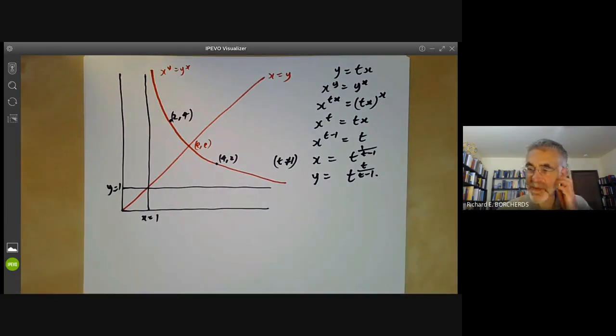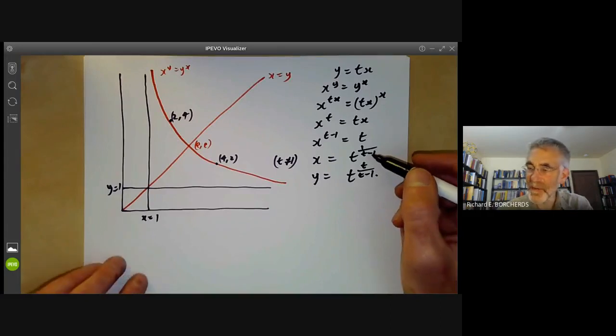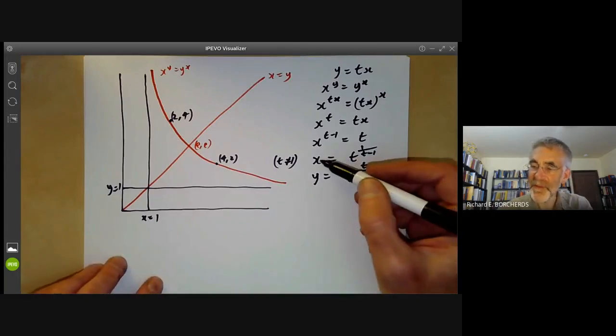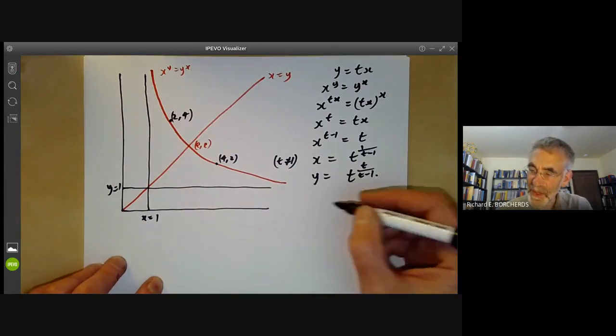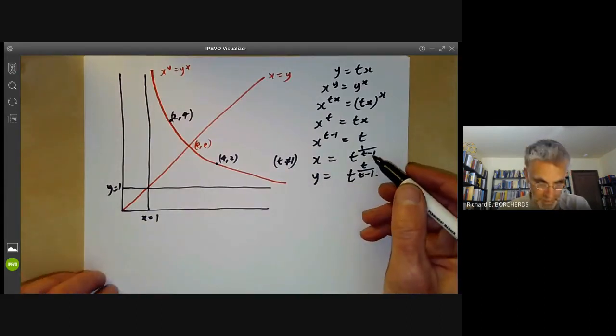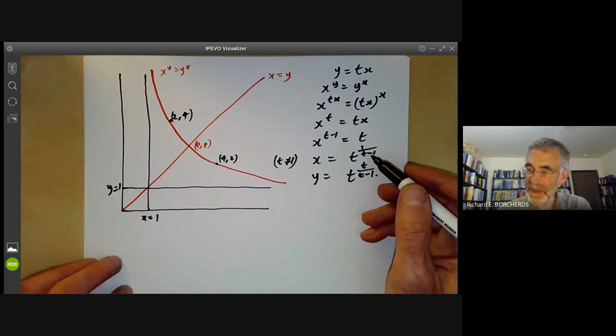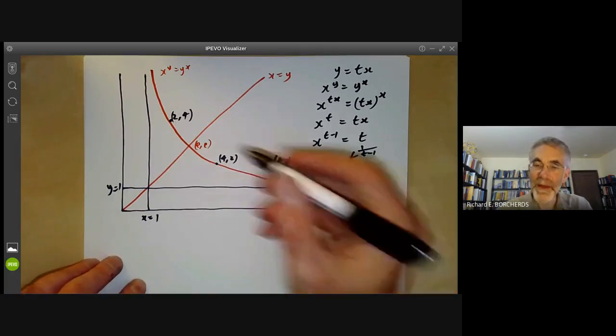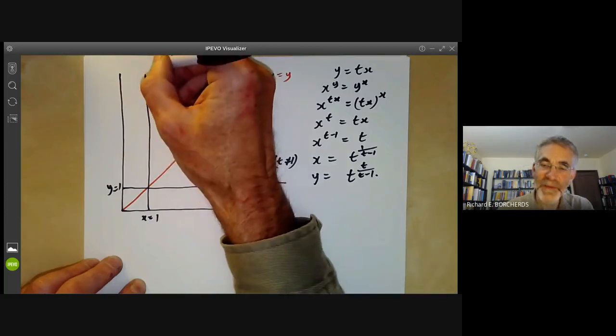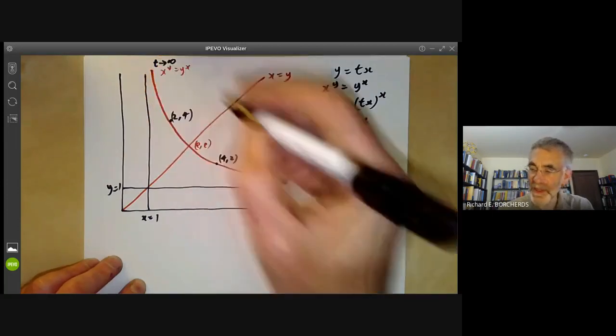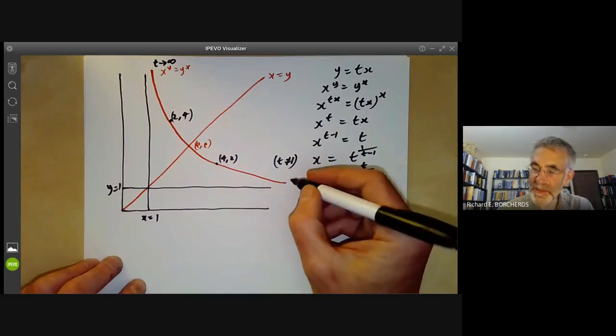So as t varies from 0 to infinity, this gives a parametric formula for this curve here. For example, if t is very large, then x is about 1 and y is about infinity. So here we have t tends to infinity. And here we have t tends to 0.